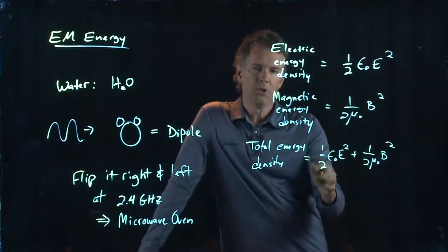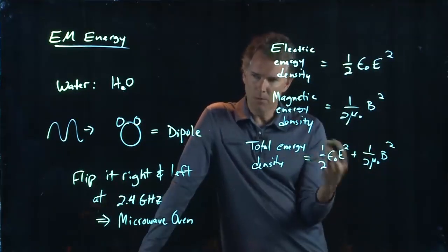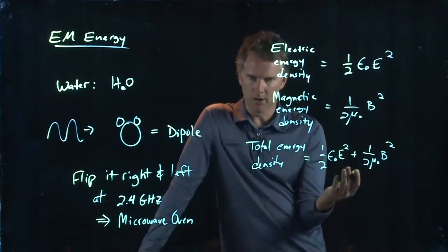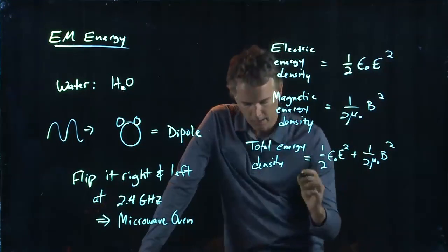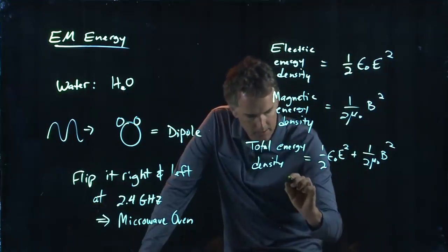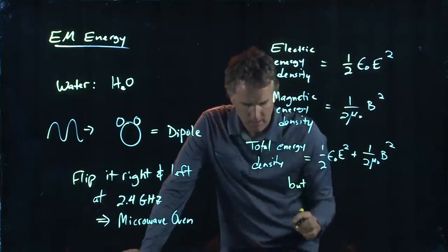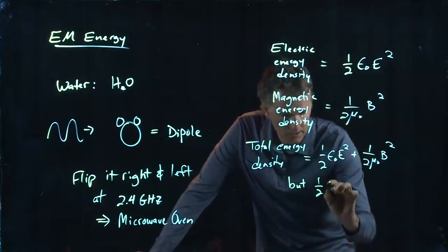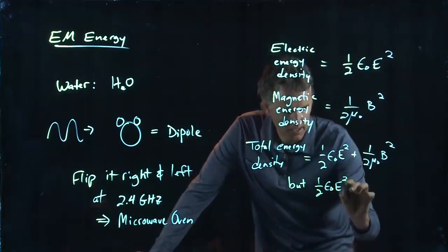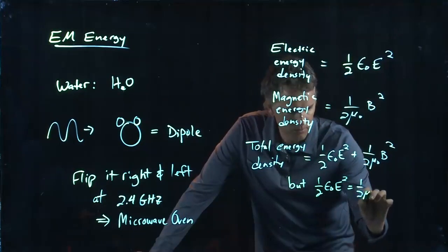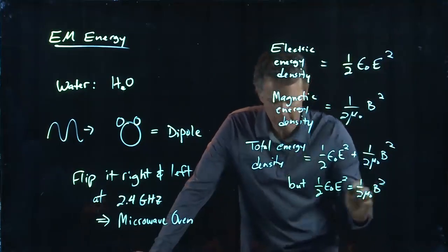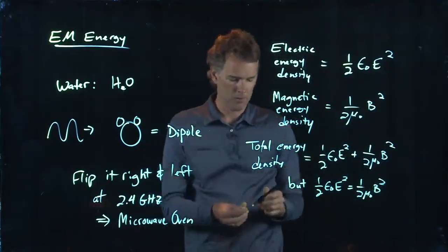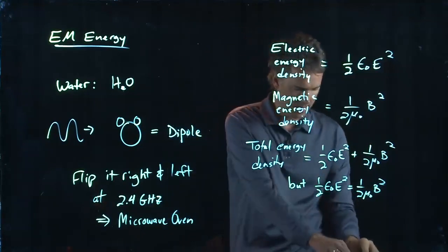But the two components have equal contribution to the overall energy density. And so we have the caveat that the electric energy density is in fact equal to the magnetic energy density. And so we can write the total energy in that wave.